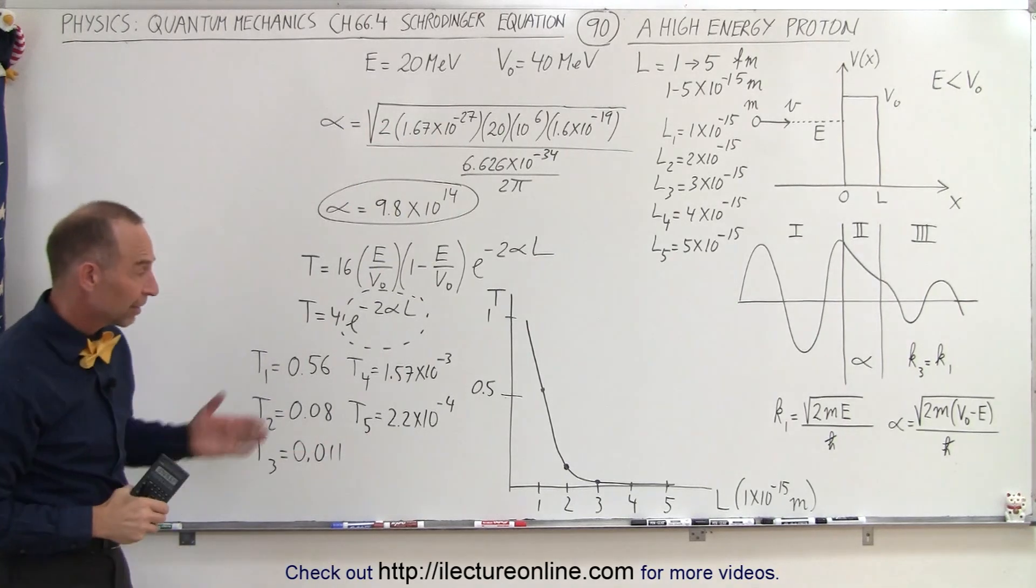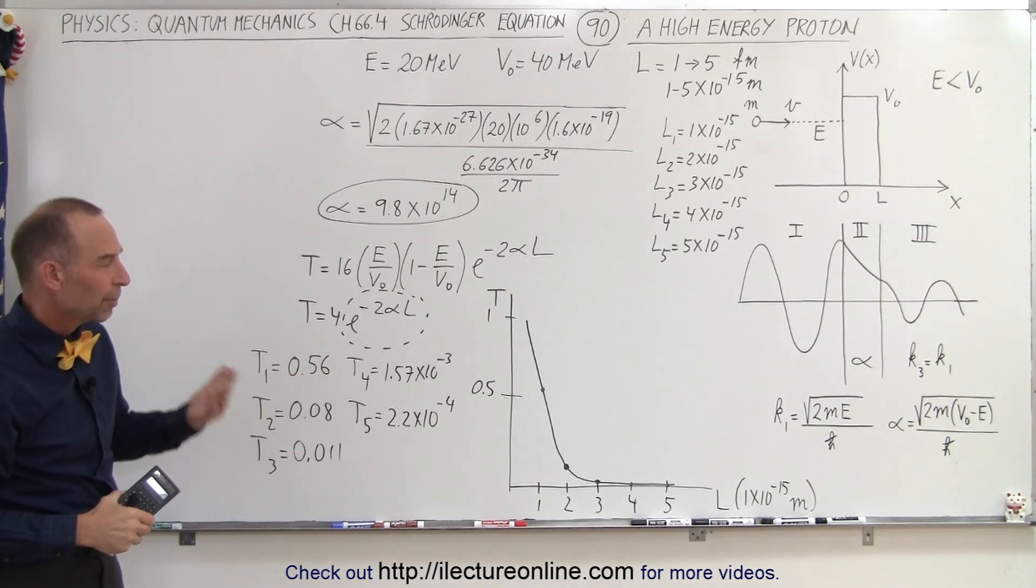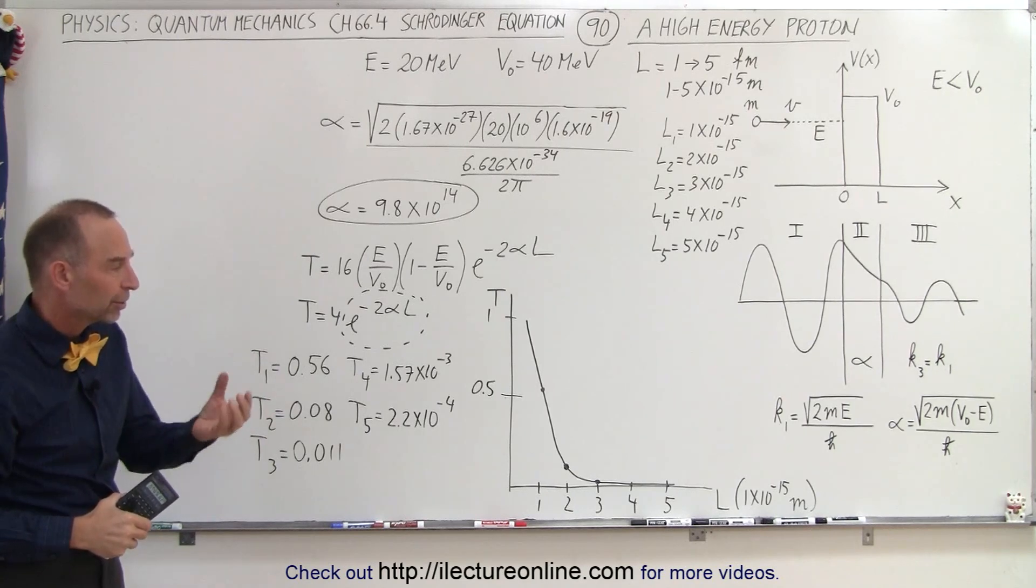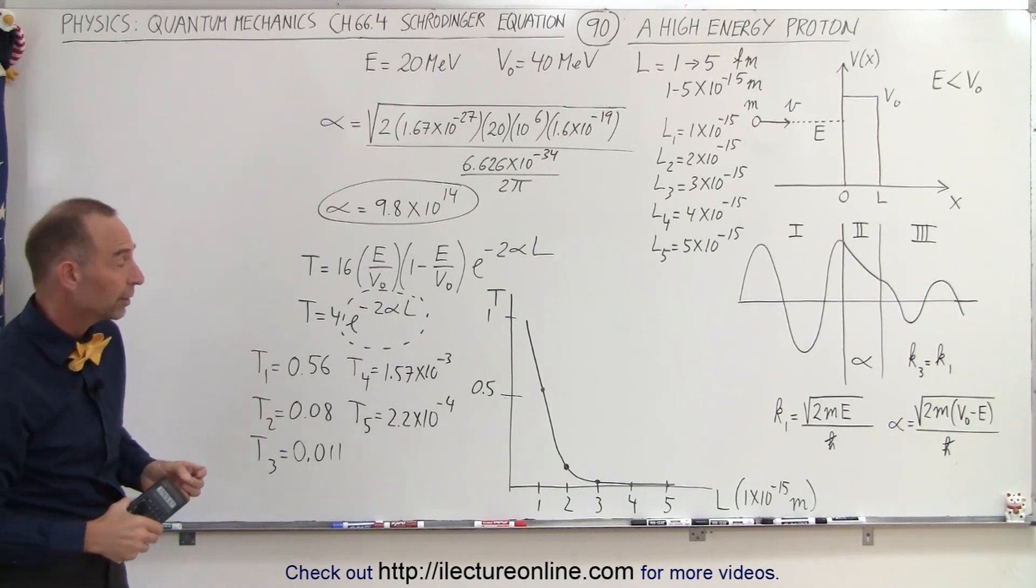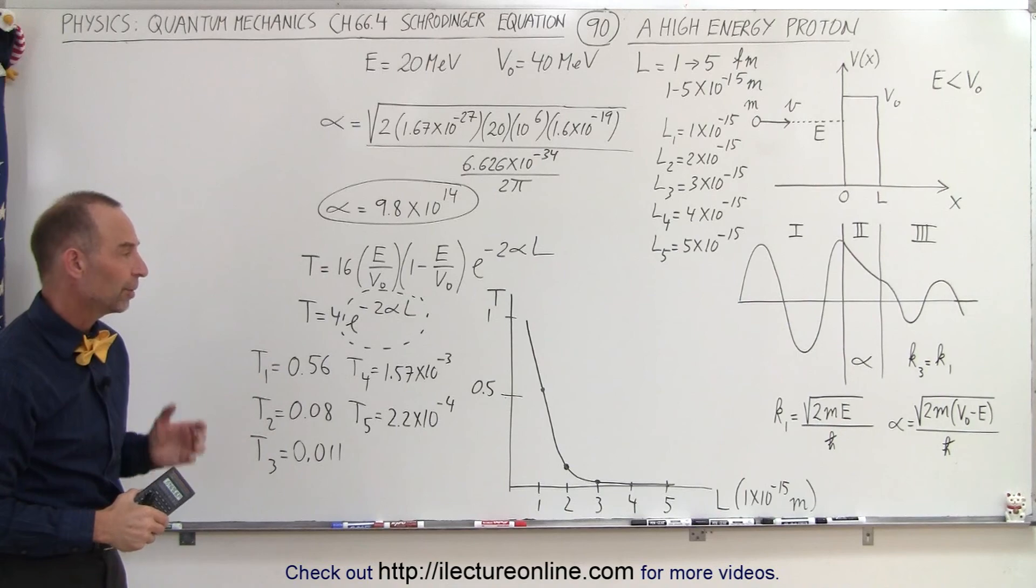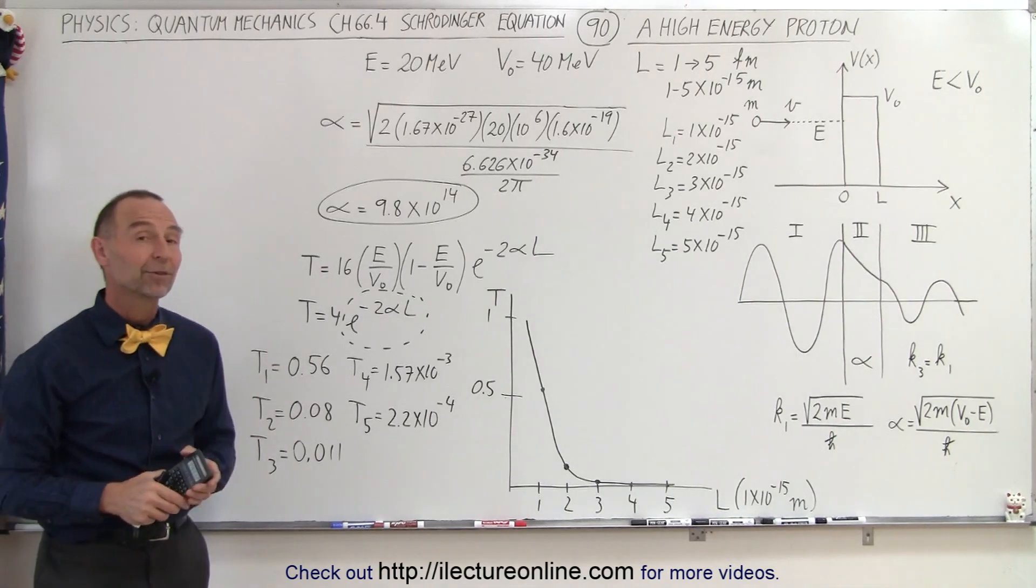But there's a good idea. That gives you a good feel for how quickly the probability of a proton making through a barrier diminishes as the barrier becomes wider, and the energy of a proton is simply not enough to get it through. And that's how it's done.